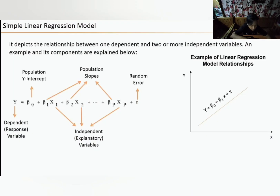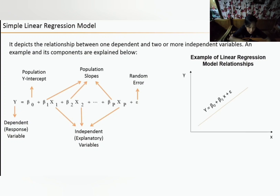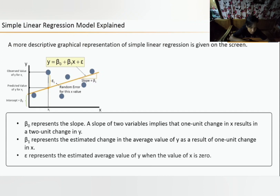To understand this model, we'll first look at a few assumptions. The simple linear regression model depicts the relationship between one dependent and one or more independent variables. One key assumption is a linear and additive relationship between the dependent and independent variables. Beta0 represents the intercept; a slope of two implies one unit change in x results in a two-unit change in y. Beta1 represents the estimated change in the average value of y per one unit change in x, and epsilon represents the error term.